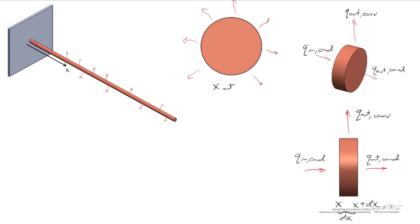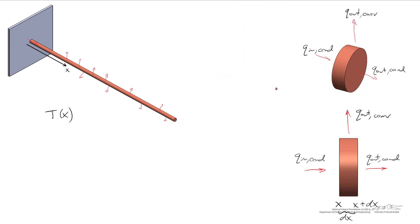Our goal here is to come up with the temperature as a function of x. One of the major assumptions we're going to make is that temperature is a function of x and only x. What that means is that we're going to assume that the temperature at the center of our extended surface is the same everywhere for all locations. The idea is that the thermal conductivity is so large that we can neglect any differences in temperature between the center and the outer surface of our rod. This would require a high thermal conductivity, or the diameter or characteristic length of our extended surface being really small.